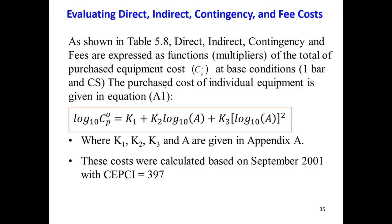Now, how do we find CP0? CP0 is the total purchase cost of the equipment at one bar and carbon steel — the base purchase cost needed in the bare module equation.